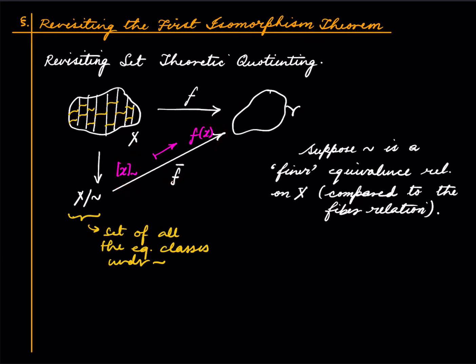This is a strengthening of set-theoretic quotienting. In standard set-theoretic quotienting we quotient out by the fiber relation itself, which is finer than itself trivially, giving an injective map. The only difference now is that F bar might not be injective — in fact it will not be injective as long as tilde is strictly finer than the fiber relation, meaning there is an equivalence class of tilde which is properly contained in some fiber.